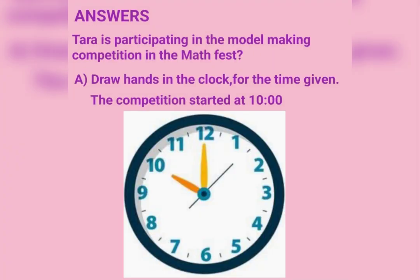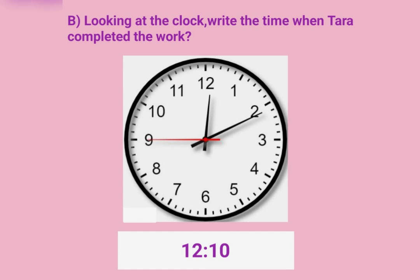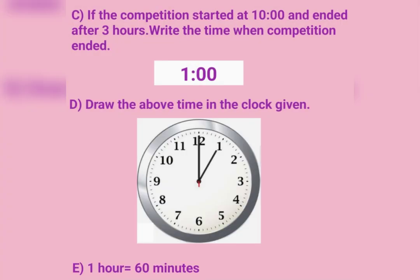Answers for Activity 5: The hands of the clock are drawn at 10 to show the competition start time. Looking at the clock, write the time Tara completed the work. If the competition started at 10 and ended after 3 hours, the competition ended at 1 o'clock. Draw 1 o'clock in the given clock. 1 hour is equal to 60 minutes.